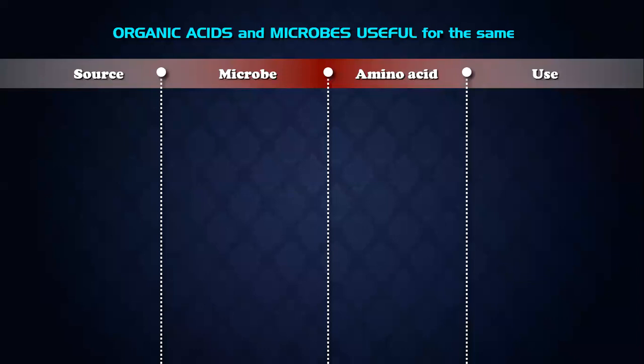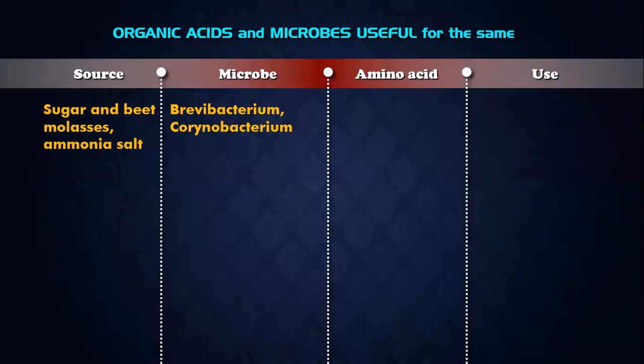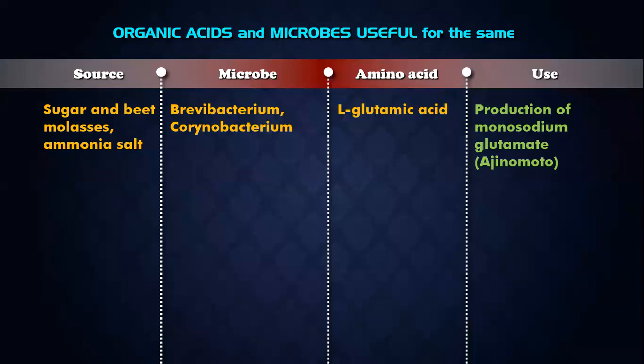Now let's look at the organic acids and the microbes that are useful for producing them. First, the source is sugar beet molasses along with ammonia salt. The microbes used are Brevibacterium and Corynebacterium. The amino acid produced is L-glutamic acid, which is used for production of monosodium glutamate — MSG, also called ajinomoto.